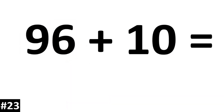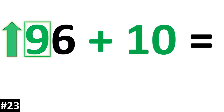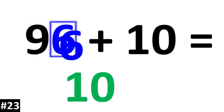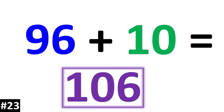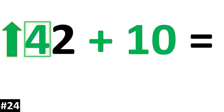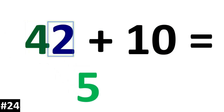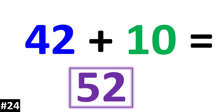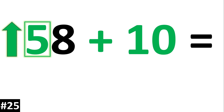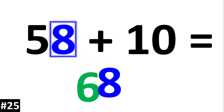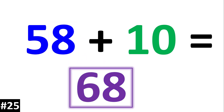96 plus 10: the tens digit of 9 is going to become a 10. The ones digit 6 stays the same. 96 plus 10 is 106.